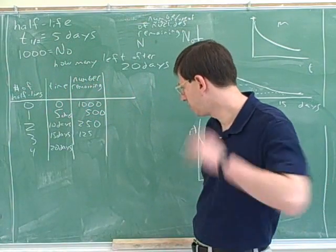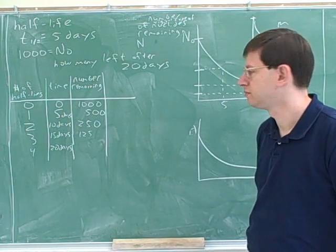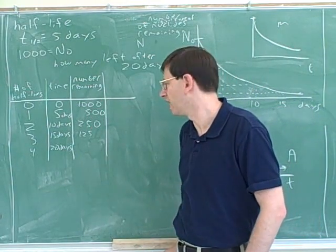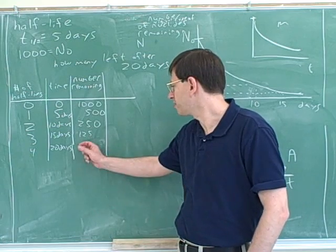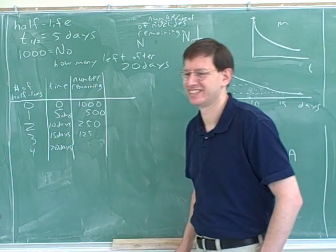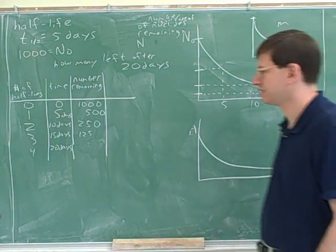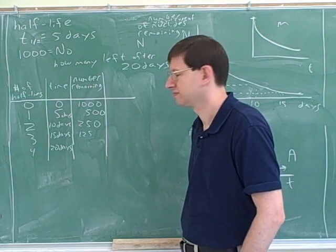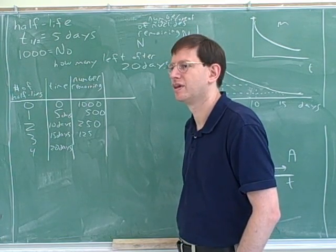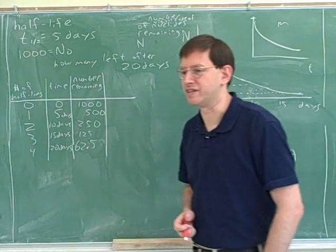So here's our table. I'm just doing what you would have said, but more on paper. So what number should this be? You might want to use your calculator. 62.5. So that would be our answer — 62.5 nuclei left.